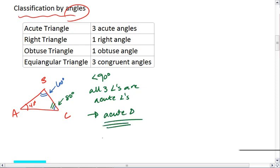Let's look instead what happens if our triangle has one right angle.